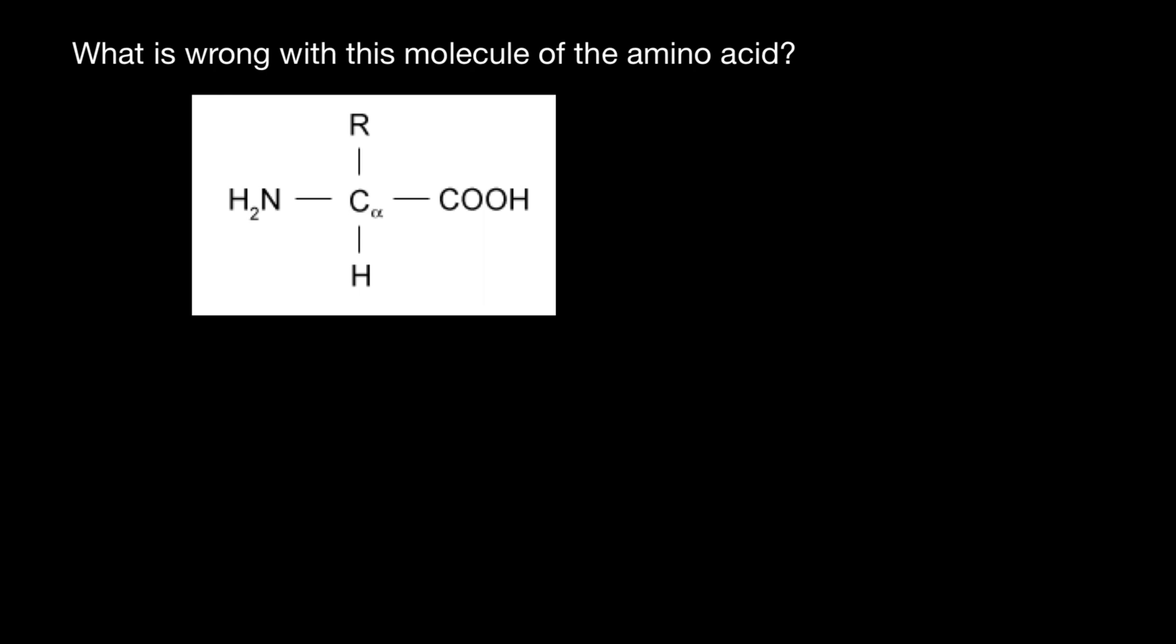All 20 amino acids have the same structure, with a central alpha carbon, amino group, carboxylic group, hydrogen group, and R group that is different in every amino acid, which specifies the amino acid.